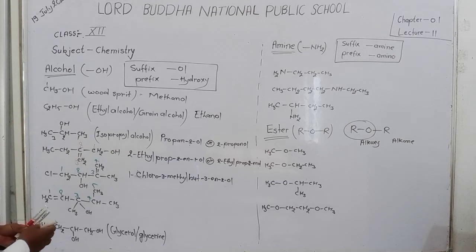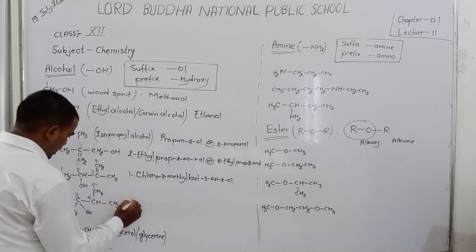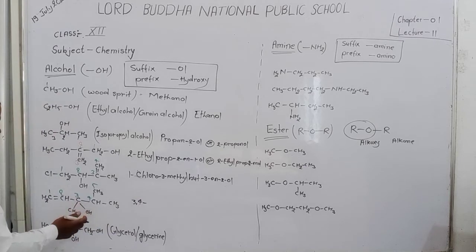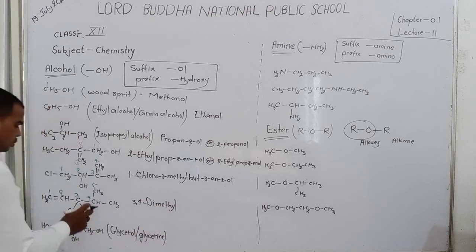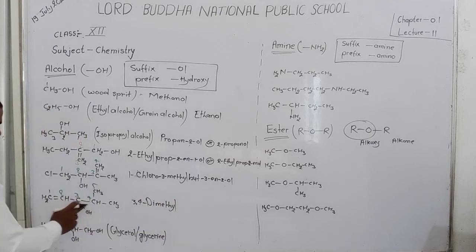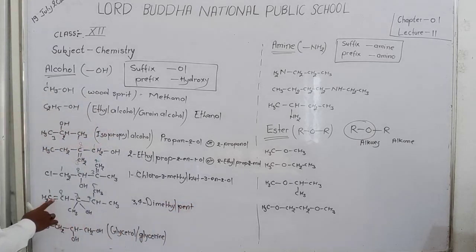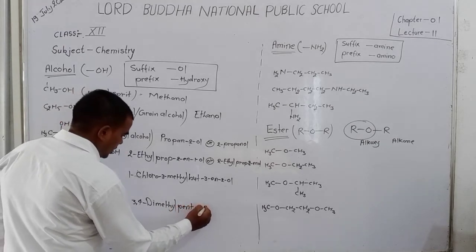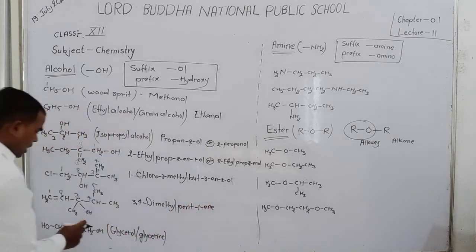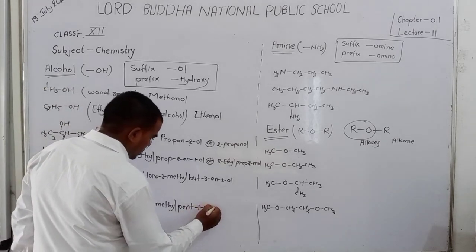Now the name of the substituent: double bonds are at positions 3 and 4, so 'di' applies — write 'di-en' for two double bonds. Number of carbons: 5 — write 'pent'. At the first position, double bond present — write '1-en'. At the third position, OH — write '3-ol'.